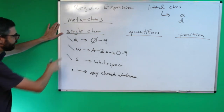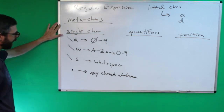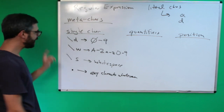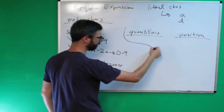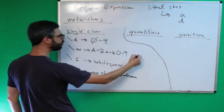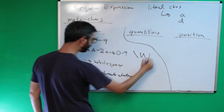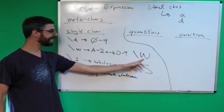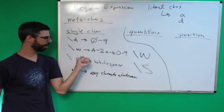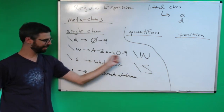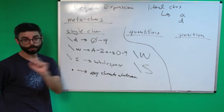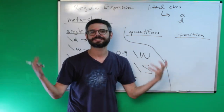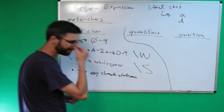An interesting thing about these characters — backslash D, backslash W, backslash S — is that they are lowercase. If you use backslash capital W or backslash capital S, this means anything that is NOT a word character or anything that is NOT whitespace. This can be very useful: for example, I want to match any non-whitespace character. Backslash capital D would be anything that's not a digit.